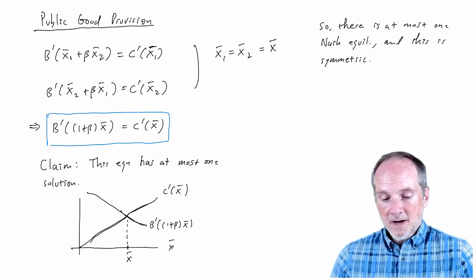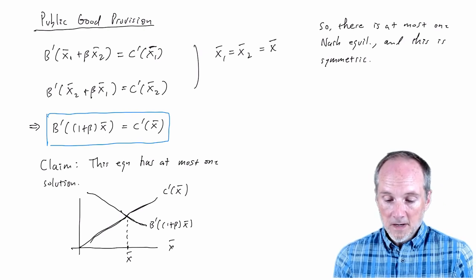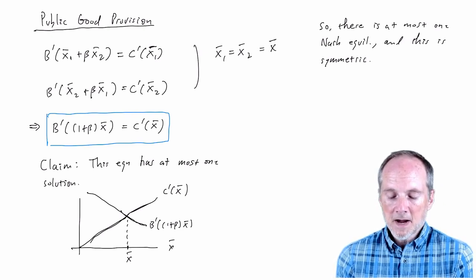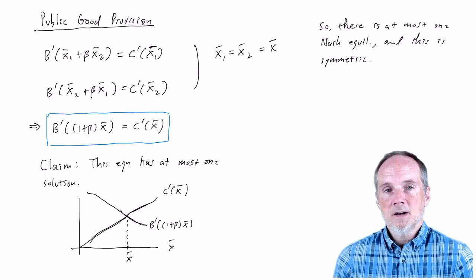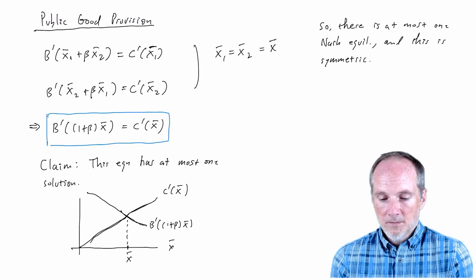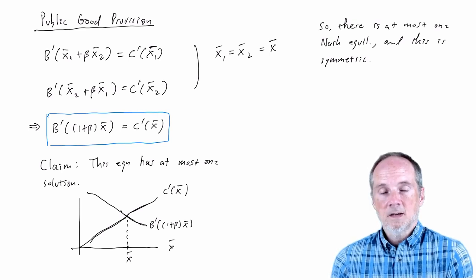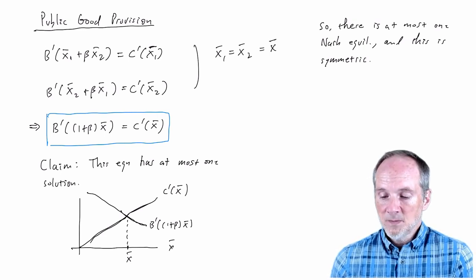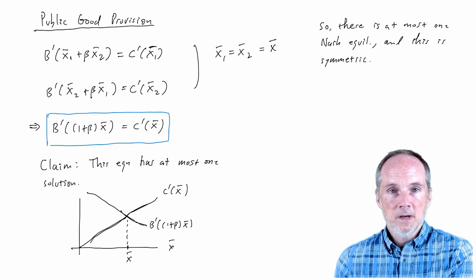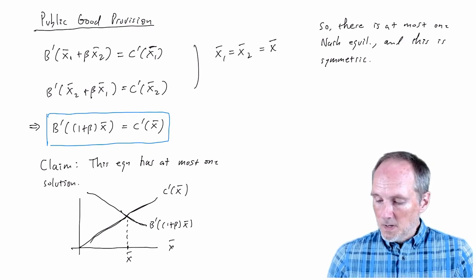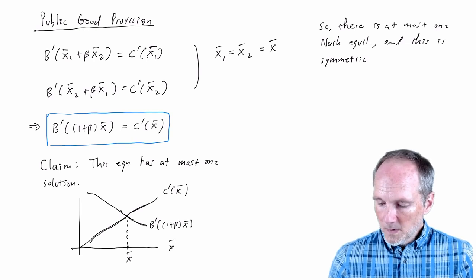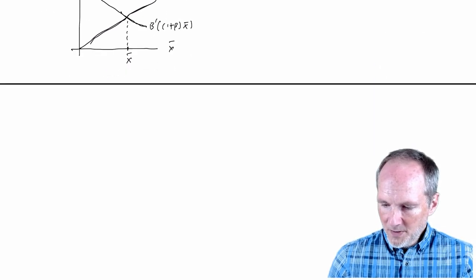So here we've been talking at a fairly general level. Really, this gives you an idea of how you can just impose a little structure on the problem about the shape of the benefit and cost functions. And from that structure you can extract implications that tell you something about interaction between rational decision makers. Let's put some meat on the bones and go through an example with explicit functional forms.